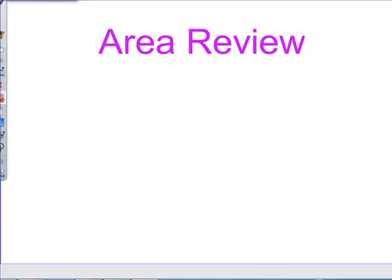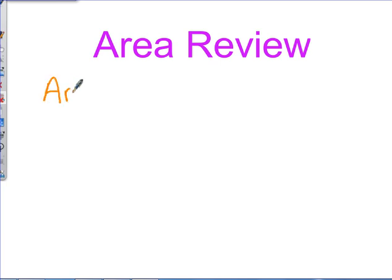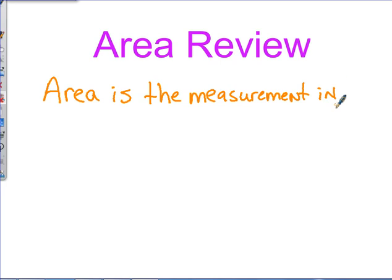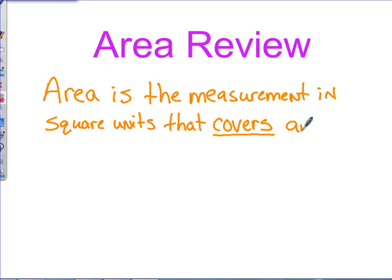First, let's go back and discuss what is area. Area is the measurement in square units that covers an object. That's why last year your unit that went over area and perimeter was called cover and surround. Covering and surrounding. So area covers an object and is always described in square units.